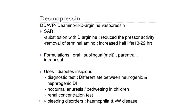Desmopressin, also known as DDAVP — D-amino-8-D-arginine vasopressin — acts via V2 receptors mainly on aquaporin channels. Activation of these channels increases water reabsorption from urine. It also stimulates release of von Willebrand factor by acting on V2 receptors. Desmopressin is degraded more slowly than vasopressin, requiring less frequent administration.